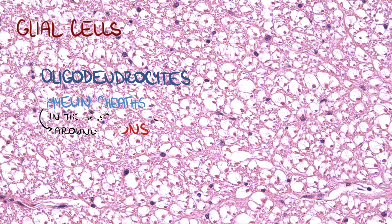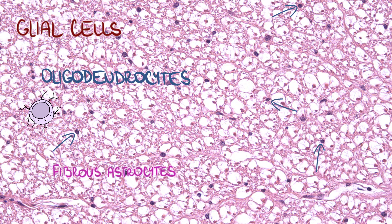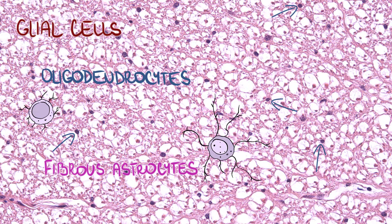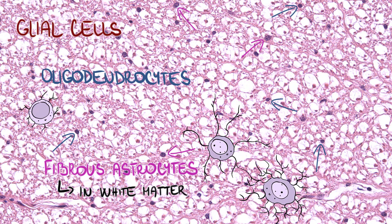There are oligodendrocytes in white matter as well as fibrous astrocytes, which are those big ones over here. We can't really tell them apart based exclusively on appearance of the nucleus. We just know that white matter contains fibrous astrocytes with longer processes.